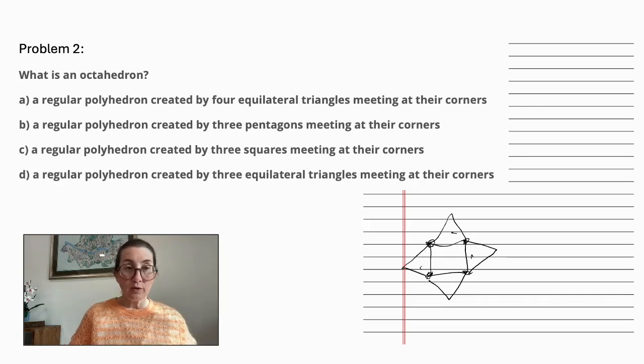All right, the next term I want to define is polyhedron. A polyhedron is a solid figure with typically more than six faces. So let's begin at D.